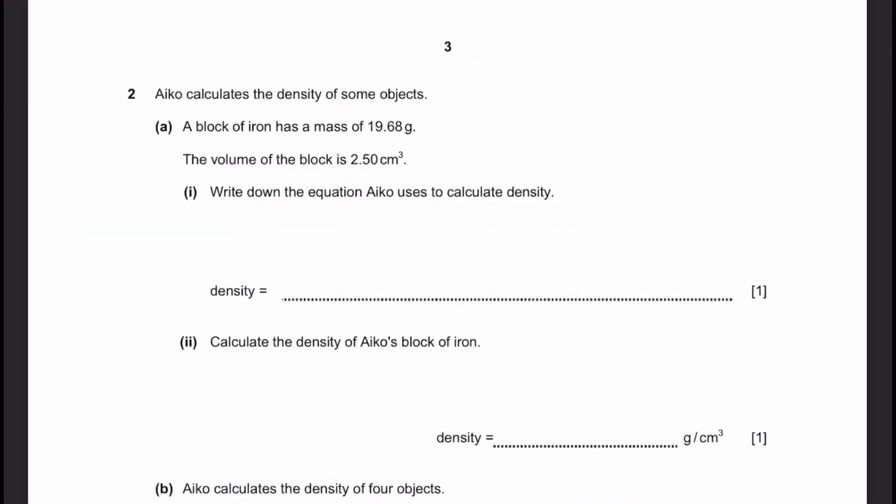Let's go to question 2. Ico calculates the density of some objects. Part A: A block of iron has a mass of 19.68 grams. The volume of the block is 2.5 centimeters cubed. Write down the equation Ico uses to calculate density. Density is equal to mass by volume. This is a fundamental equation and you have to remember this so that you can do this problem.